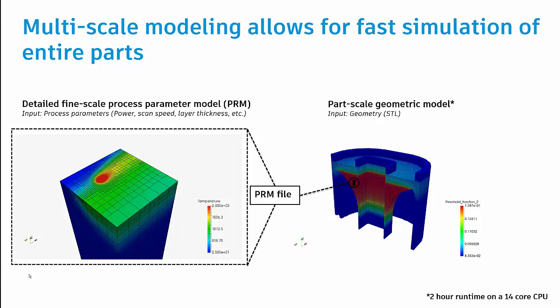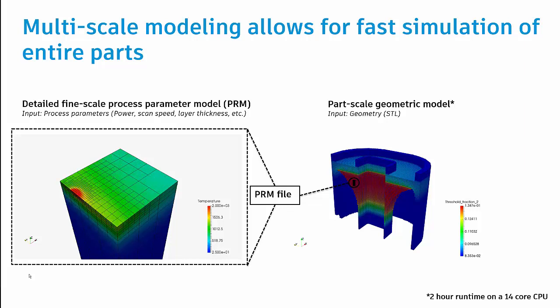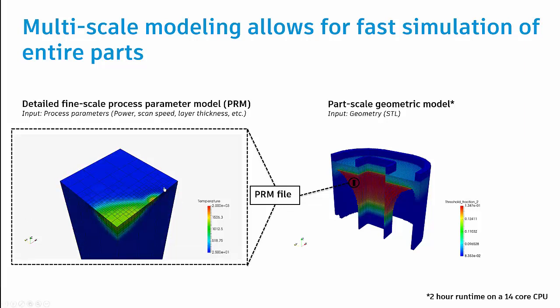What we get out of this is an understanding of how much of this material is likely to get too hot under this parameter setting and how much of the material is likely to not get hot enough. Those temperatures of hot or too hot are user defined. The information from this small scale run gets stored in a PRM file just like for the stress and distortion.